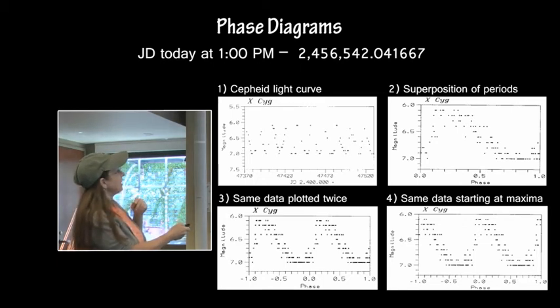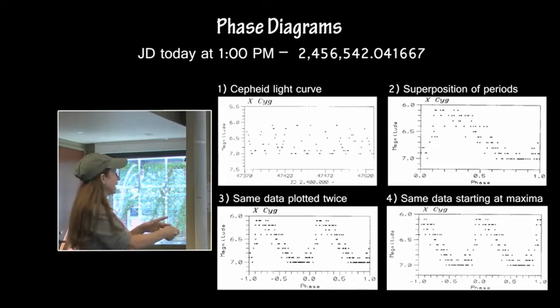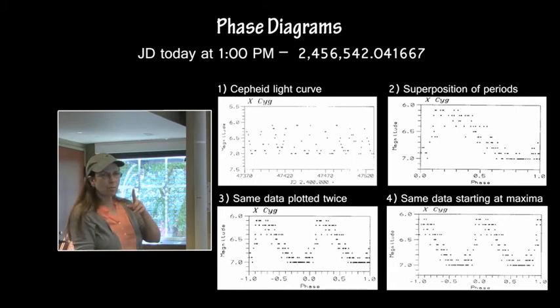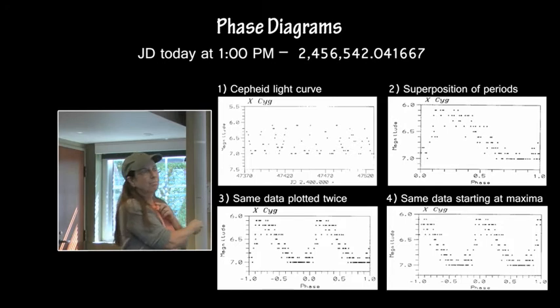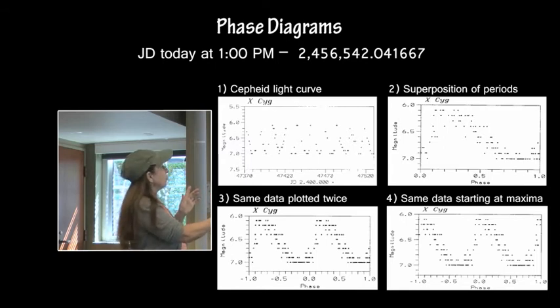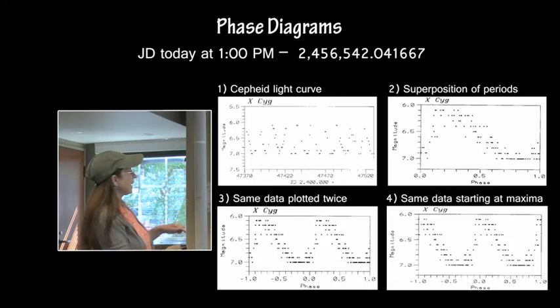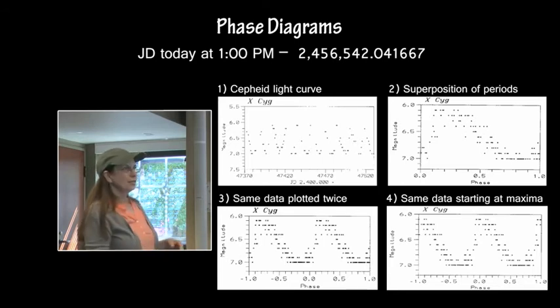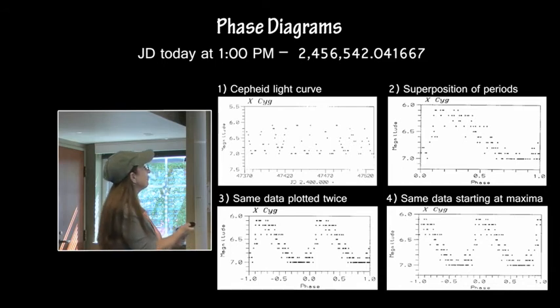So what they do is take this information here and plot it twice. So here is zero to one down here. There is that same data down here, zero to one, and that same data has been plotted in front of it, and that's minus one to zero, and you can see it's the same exact data. So we're almost there. They want the maximum to begin at the origin, so then all they do is just slide it all over. They determine where the maximum is. They slide it over so the maximum is right on the origin at negative one phase, and now you can determine the period with some degree of accuracy. So you can use it any way you want to. You might want to use the period-luminosity relationship to determine the distance to the variable star.